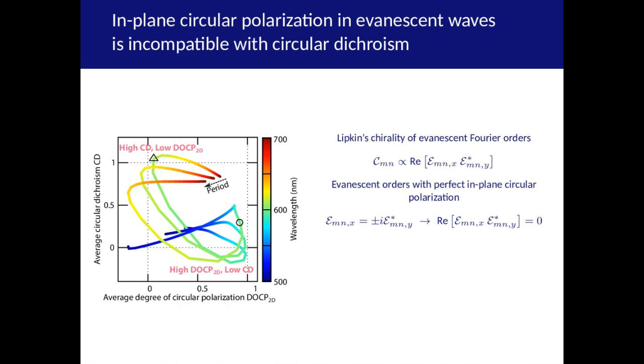In an evanescent order, Lipkin's chirality is proportional to the real part of EX times EY conjugate, which means that it is maximized when EX and EY are in phase. But if the evanescent order is perfectly circularly polarized, these components will be 90 degrees out of phase, giving a zero Lipkin's chirality.